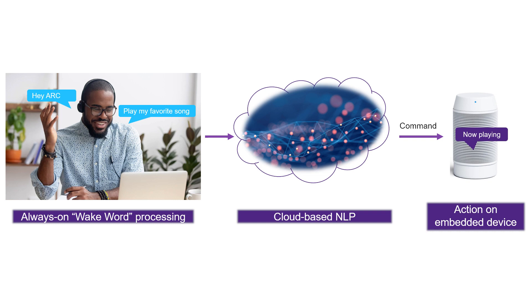NLP today usually happens in the cloud. This means that a typical pipeline of a voice-controlled system looks like this. If you ask your digital home assistant for weather, the request goes to the cloud and then comes back to your device. The only on-device processing that happens is the wake word recognition that triggers your assistant to start listening to your request.